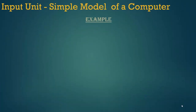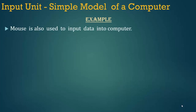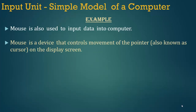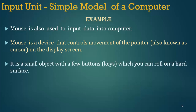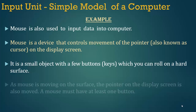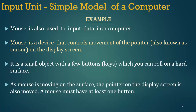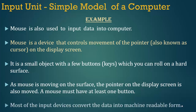A mouse is also used to input data into a computer. A mouse is a device that controls the movement of the pointer, also known as the cursor, on the display screen. It is a small object with a few buttons which you can roll on a hard surface. As the mouse is moving on the surface, the pointer on the display screen is also moved. A mouse must have at least one button. Most input devices convert the data into machine-readable form.